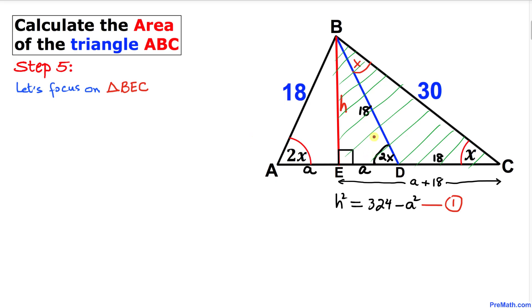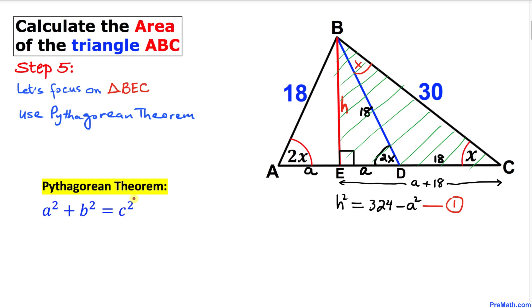Here's the Pythagorean theorem: A² + B² = C². In this triangle, (A + 18) is our 'A', the height H is our 'B', and 30 is our 'C'.